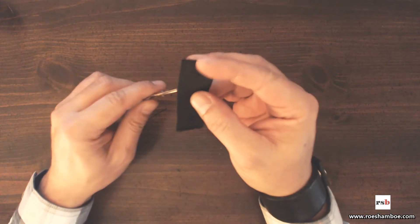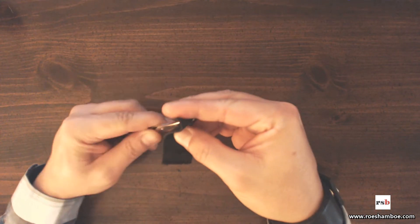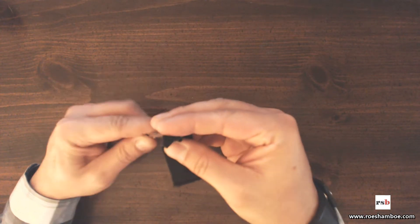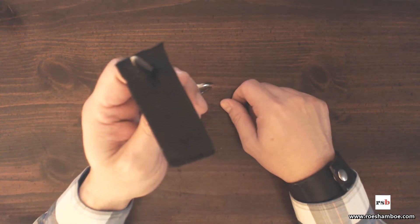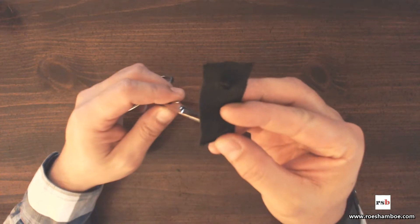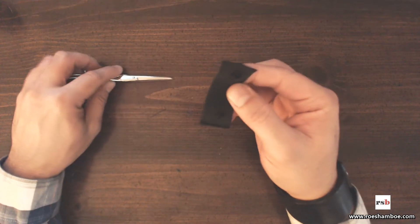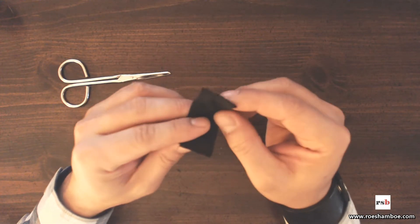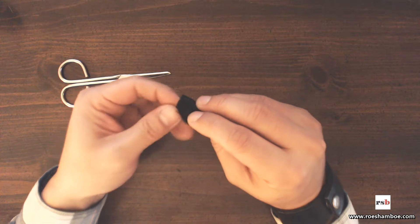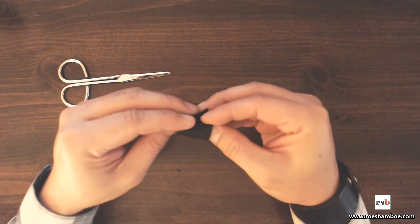Once you get the strips cut to length, you need to put a couple holes in each side, about equidistant from the edges. Do the same on this side as well. After you get all your strips punched out and cut to length, they're going to be folded over like this with the holes lined up.